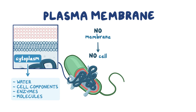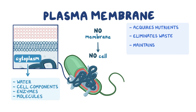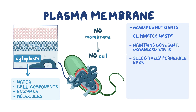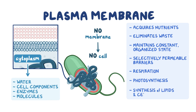The plasma membrane is responsible for most of the cell's relationship with the outside world, by acquiring nutrients and eliminating waste, and also maintains the interior of the bacteria in a constant, highly organized state. All plasma membranes are selectively permeable barriers, which allow certain ions and molecules to pass in and out of the cell while preventing the movement of others. However, in bacteria, the plasma membrane has other important roles, such as respiration, photosynthesis, and the synthesis of lipids and cell wall components.